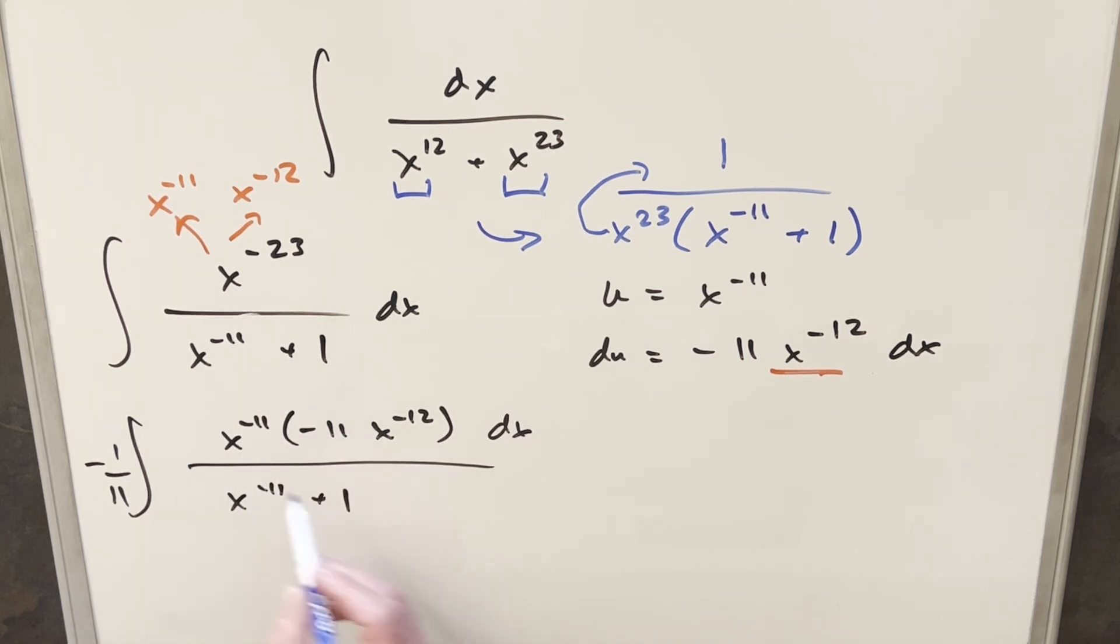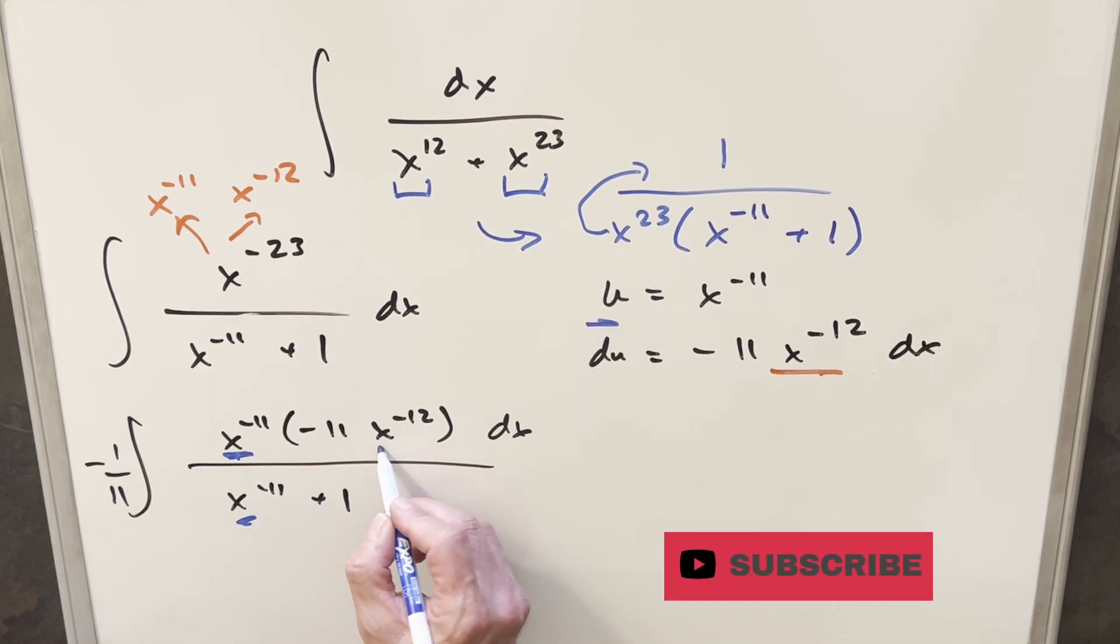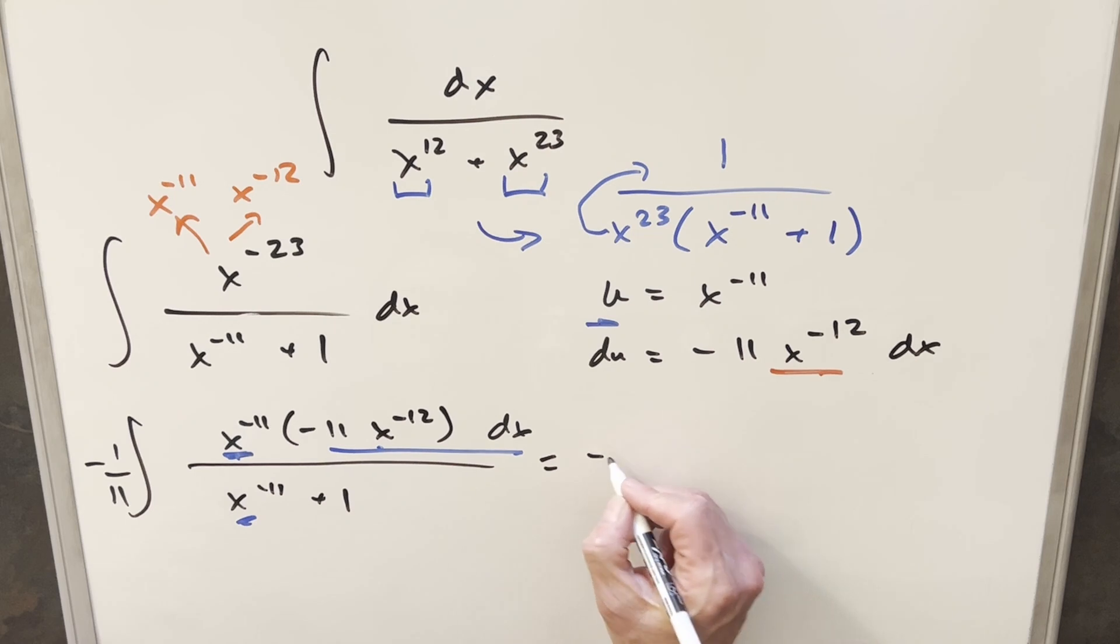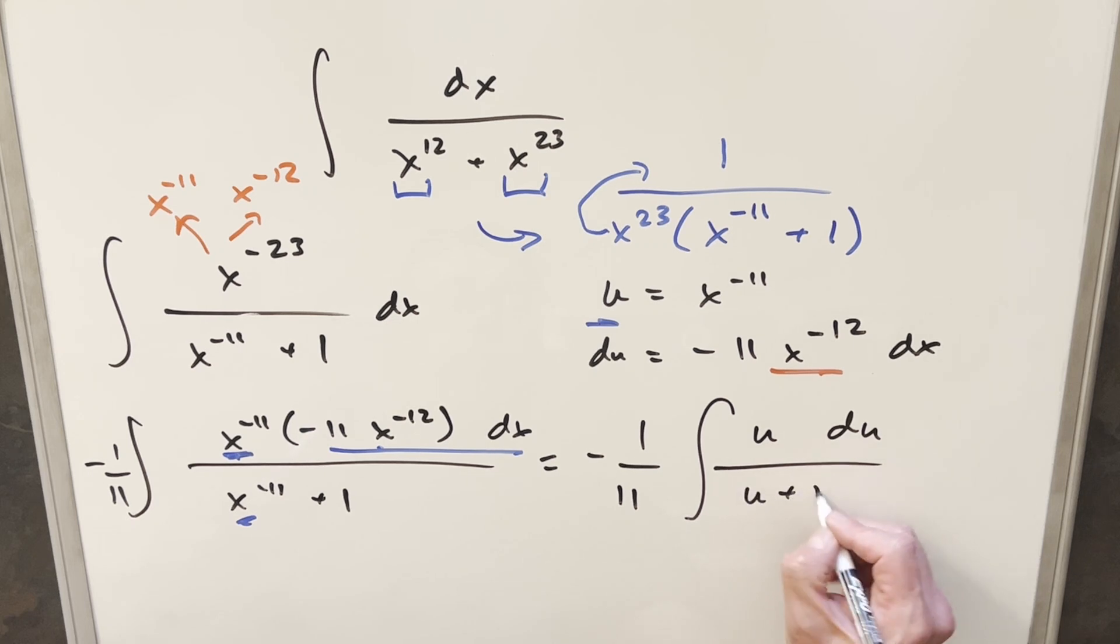And then we'll bring down all this here. And then having it like this, we've set up our u substitution because now this piece is just our u and we have u here and we have our du right here. So we'll go ahead with this. What we're going to have is we'll still have this minus 1 over 11 in front. Then this is going to be u du over u plus 1.